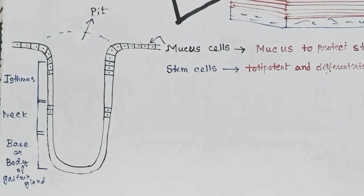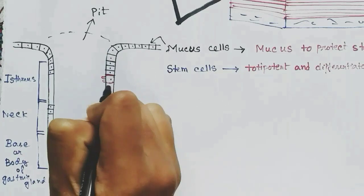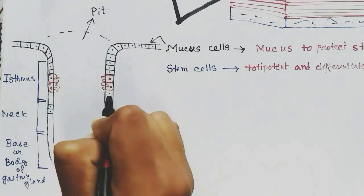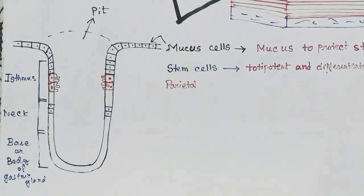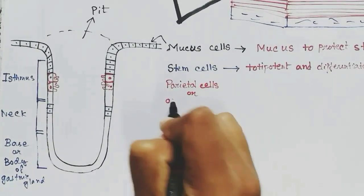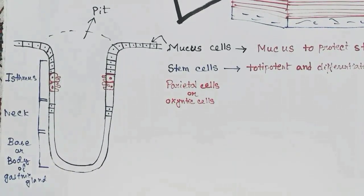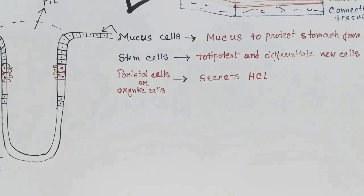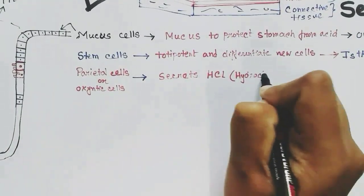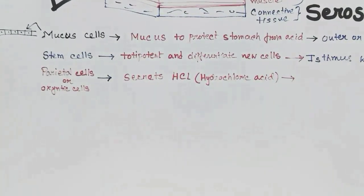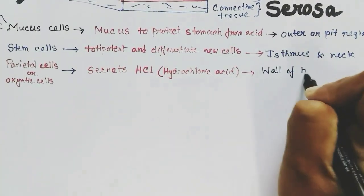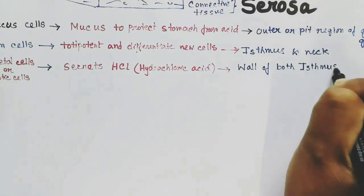In the neck region are the parietal cells, which have intracellular invaginations called canaliculi. Parietal cells are also called oxyntic cells. These cells secrete HCl, that is hydrochloric acid, making the stomach environment acidic. They are present in the wall of both the isthmus and neck region. The word parietal means wall.